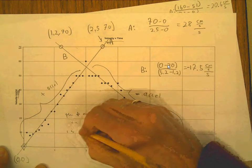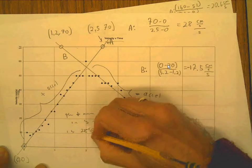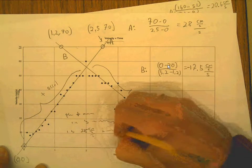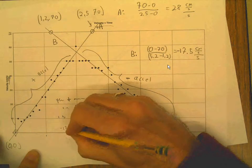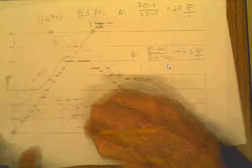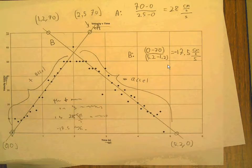It is 28 centimeters per second per second, as opposed to negative 17.5 centimeters per second per second. So therefore, the positive is greater in magnitude. And I think that's all you have to do.